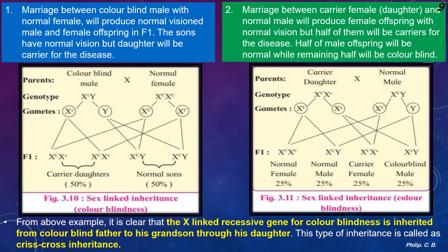From these examples it is clear that the X-linked recessive gene for color blindness is inherited from a color-blind grandfather to his grandson through his daughter. This type of inheritance — skipping one generation — is called crisscross inheritance.